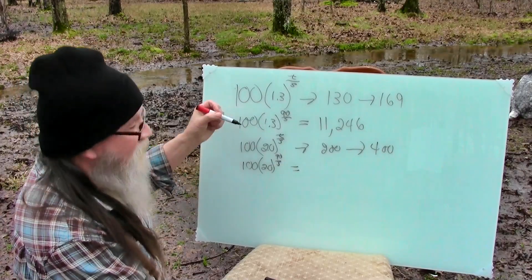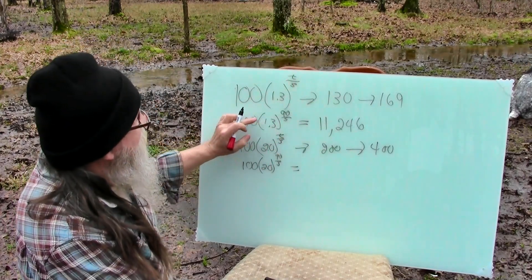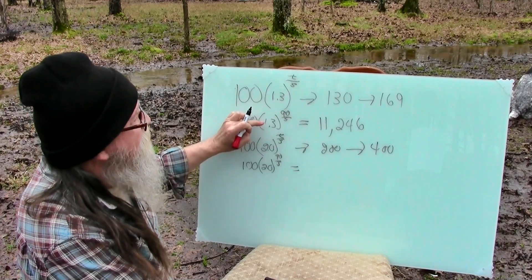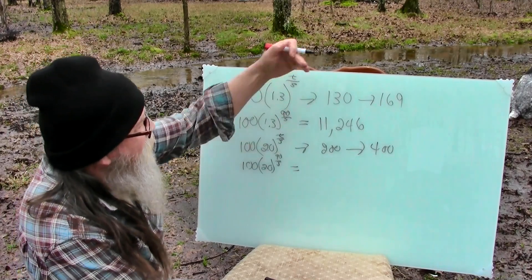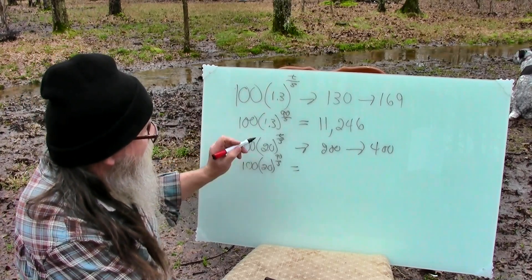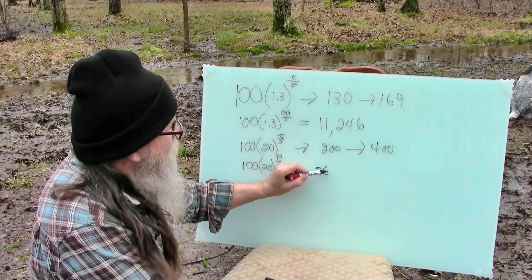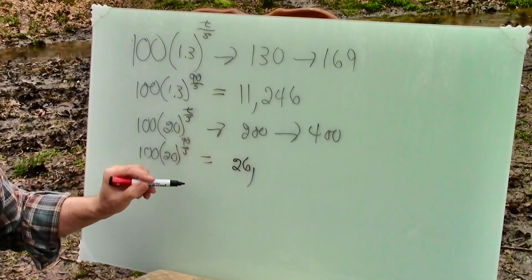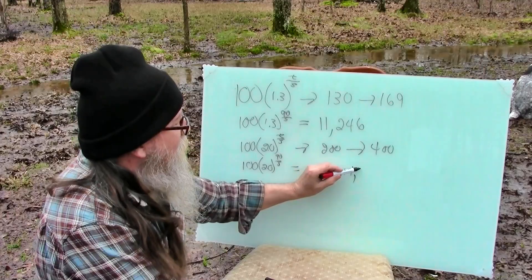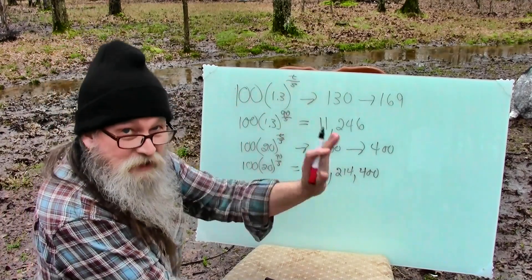If we just change the 1.3 and this is that exponential growth thing. If here, each person infected 1.3 people every five days. Here, each person is infecting two people and our increment is five days incubation. 26,214,400. So this is showing you that exponential growth.